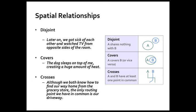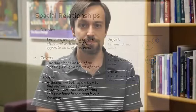And then you can have things with paths too. You might have the crosses relationship. That's where A and B have at least one point in common. Although we both know how to find our way home from the grocery store, the only routing point that my wife and I have in common is our driveway at the very end. Those are some of the basic relationships.